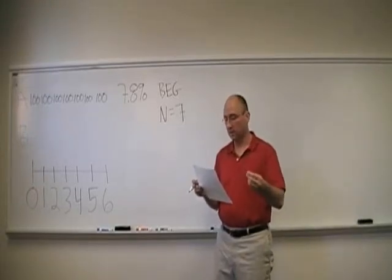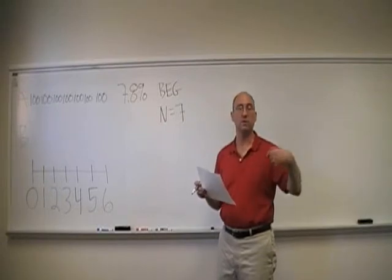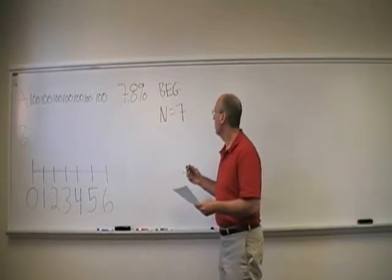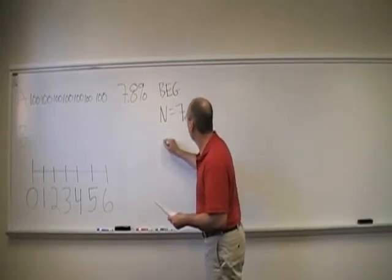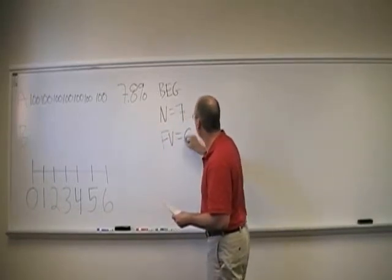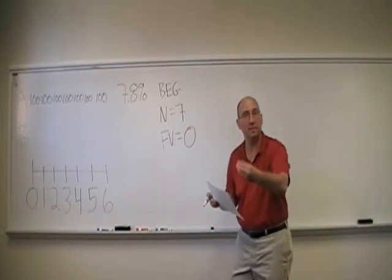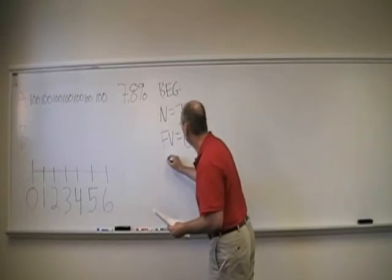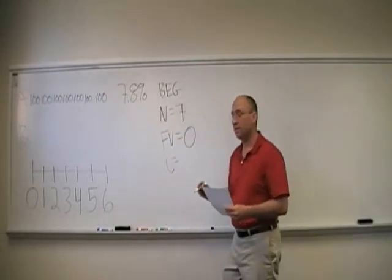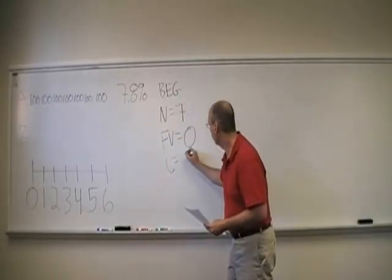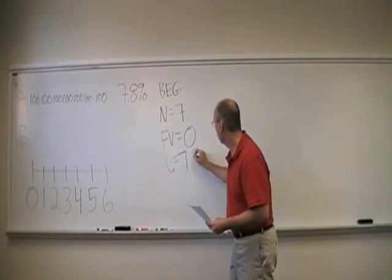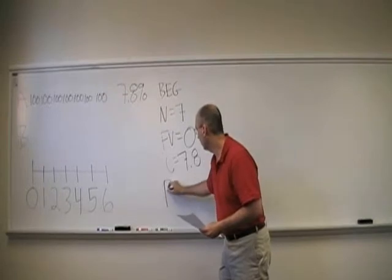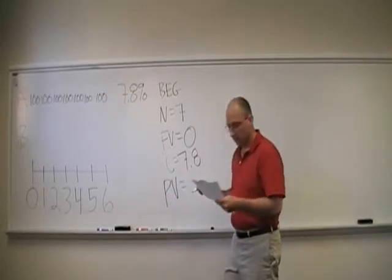We add FV is equal to zero, there's no extra payment at the end. I percent, 7.8%, that's given. We solve for PV, and what do we get? 565.11.